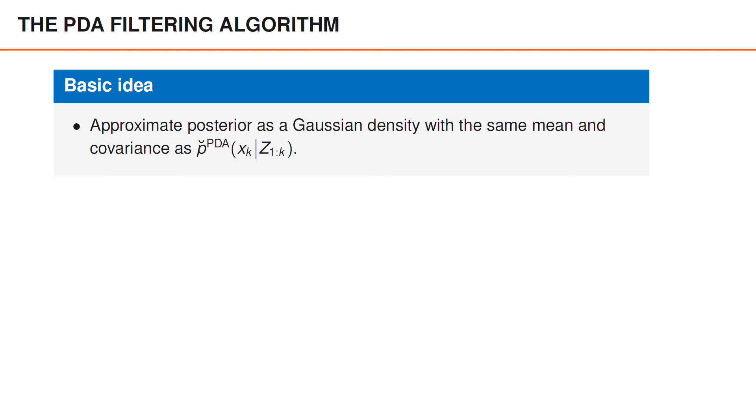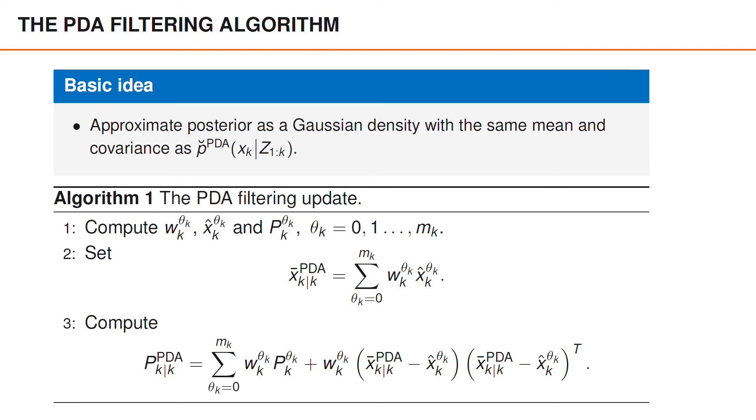Coming back to PDA filtering, we can summarize the steps that we need to perform in order to implement the algorithm. The update step can be separated into three steps. First, we compute the parameters of the Gaussian mixture, which are the weights, means, and covariances of the different components. Second, we compute the posterior mean using a weighted sum of the individual means. Third, we compute the covariance by computing both the average covariance and the average spread of the means. As you can see, assuming that we know how to compute the Gaussian mixture, the PDA algorithm is very simple to implement.